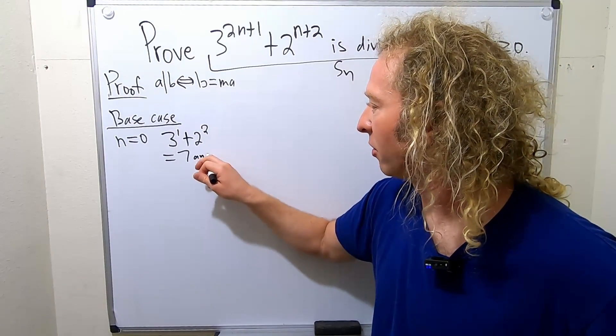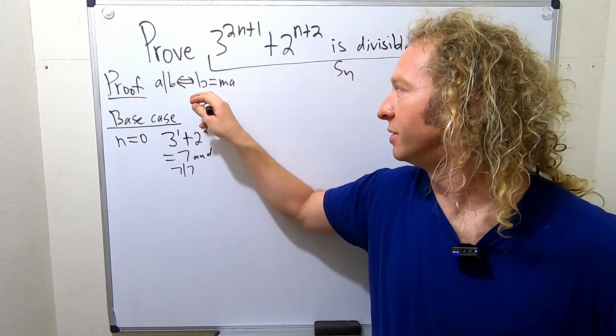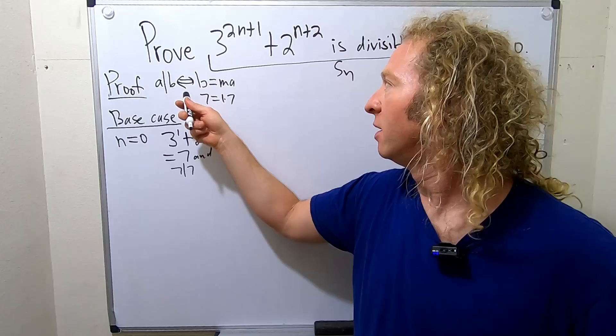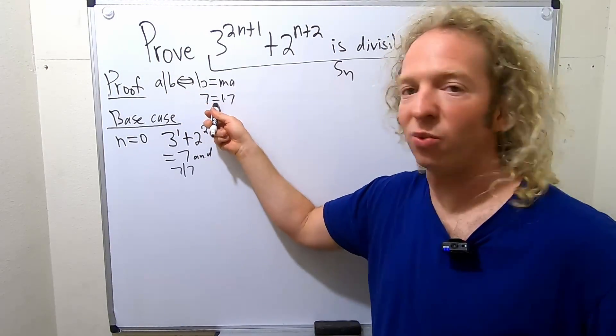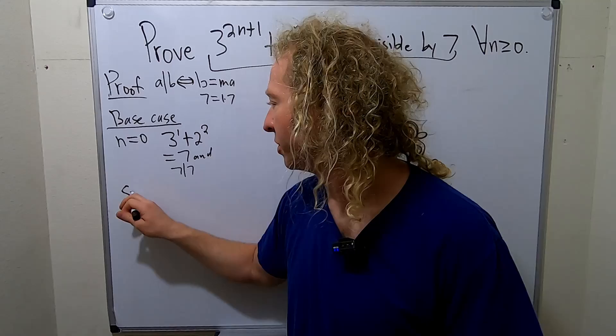And I'll write it though. 7 divides 7. If you really want to be picky, you could make it match this definition, right? You could say 7 is equal to 1 times 7. So 7 divides 7, because 7 is equal to 1 times 7. So that means the base case is done. So S sub 0 is true.